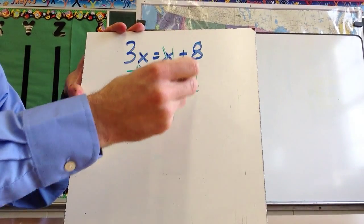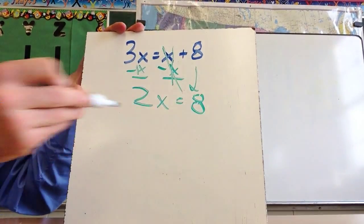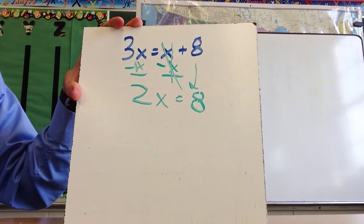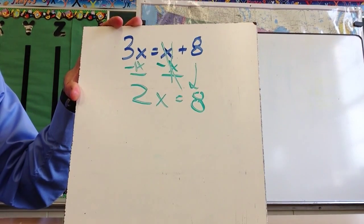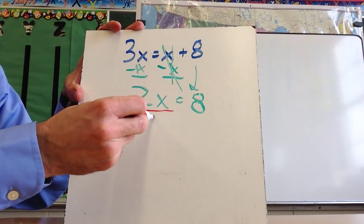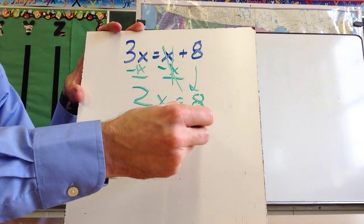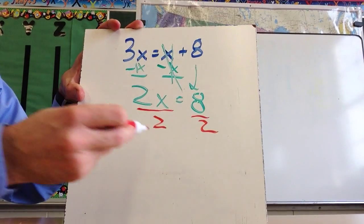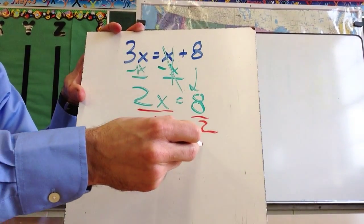And then this is coming down, and since this was positive, this is a positive 8. I now have 2x equals 8. I don't want to know what 2x is, I want to know what 1x is, and so all I'm going to do is take the number in front of the x, the coefficient in front of the x is a 2, I'm going to divide both sides by 2, and I end up with x equals 4.